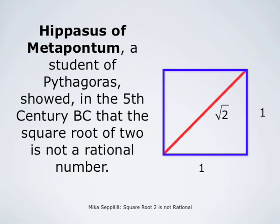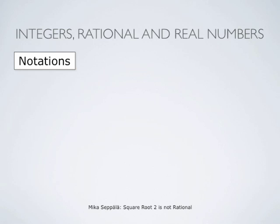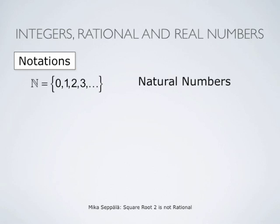Now, to set up the starting point, let us introduce some notation. Natural numbers are the numbers 0, 1, 2, 3, and so forth — that is, 0 and the positive integers.